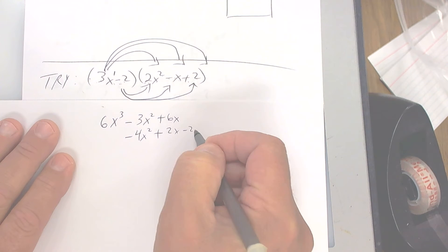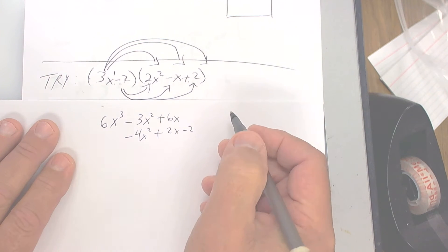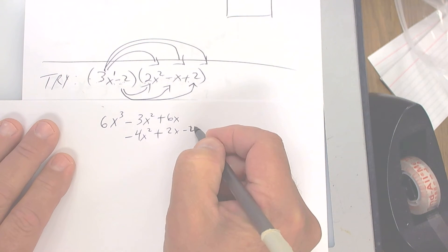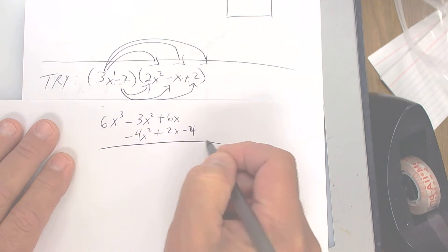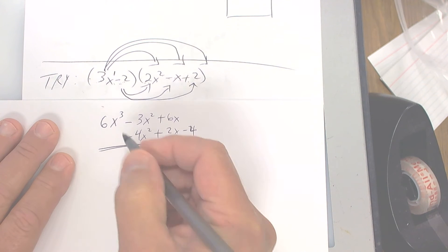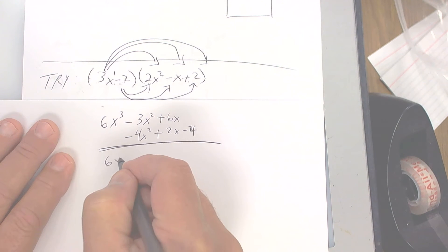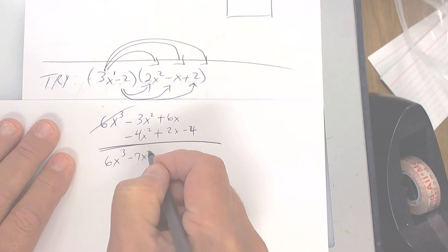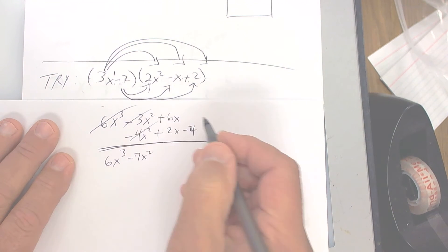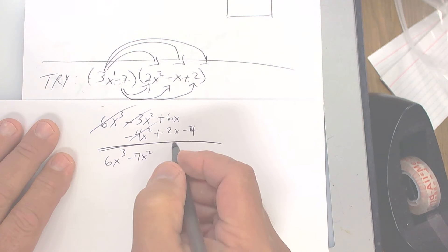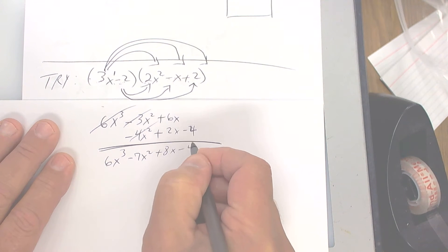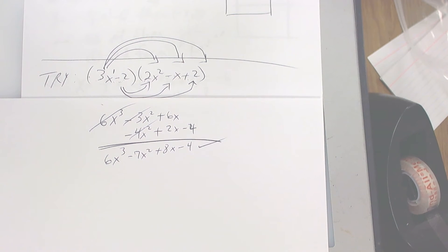Negative times a negative — that's two negatives — so that's a plus two x. And then finally a negative times a positive, so negative four. So we're going to combine like terms: six x to the third, minus seven x squared, plus eight x, minus four. That should be your answer. And that's how you do that — it's not hard, it's similar to FOIL.